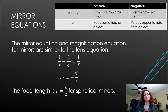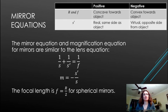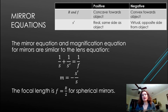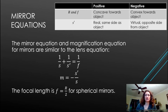The mirror equation is: 1/s + 1/s′ = 1/f. The magnification is m = −s′/s, and the focal length is f = r/2.